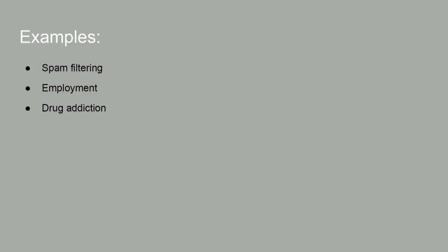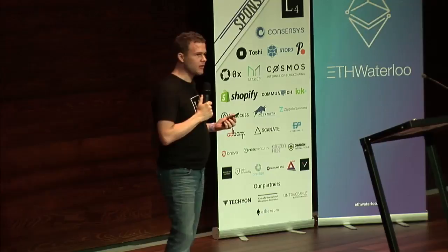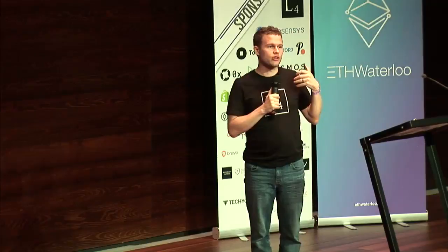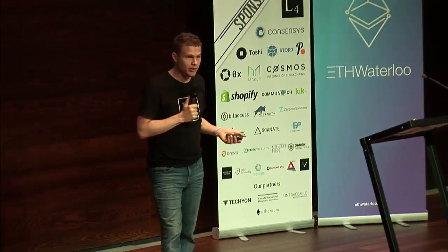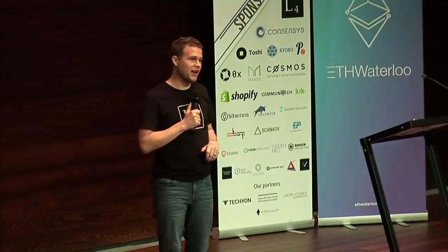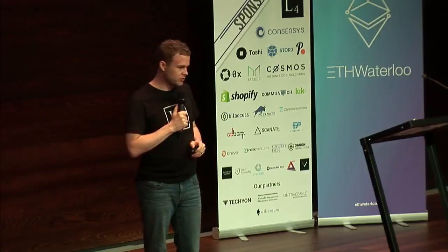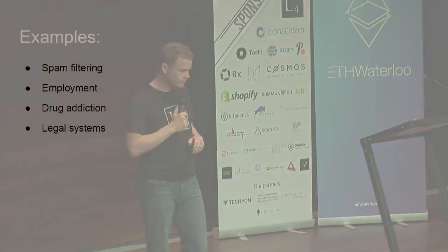Drug addiction — I mentioned that some mechanisms can be naturally occurring. And sometimes the goals that a mechanism shapes you towards are not desirable. The chemicals in our brain that normally reward us for good things or identify positive things in our environment can also be directly exploited with chemical triggers, and these can prove incredibly effective at shaping human behavior — but perhaps not in the direction that we want. So not all mechanisms are positive, but some of them can potentially be reshaped.